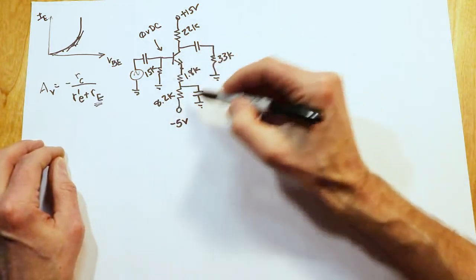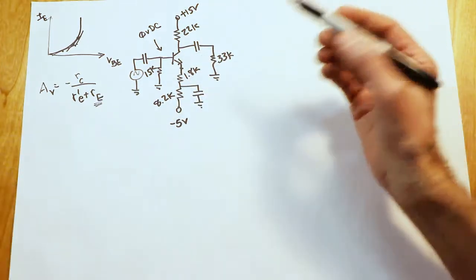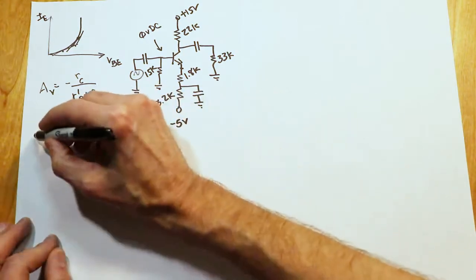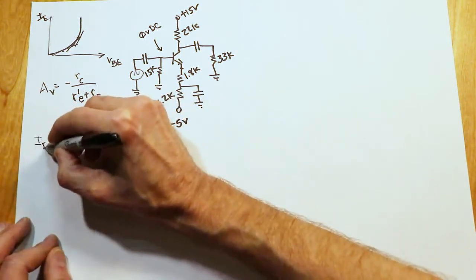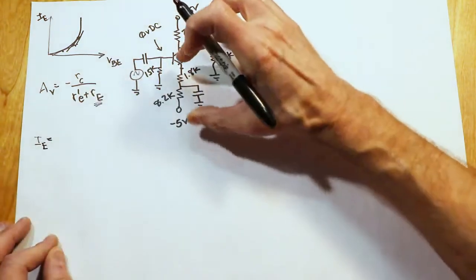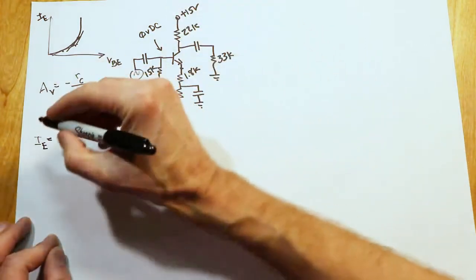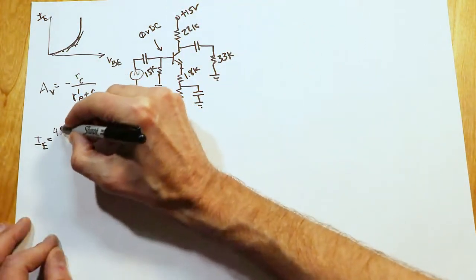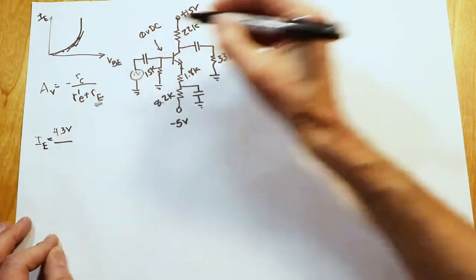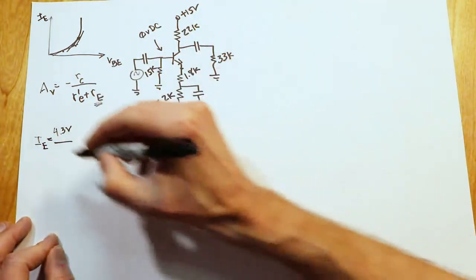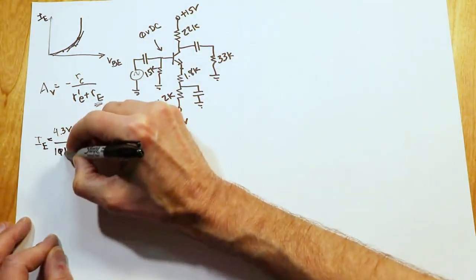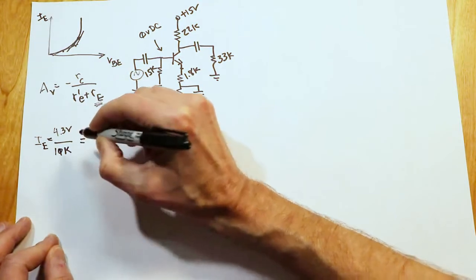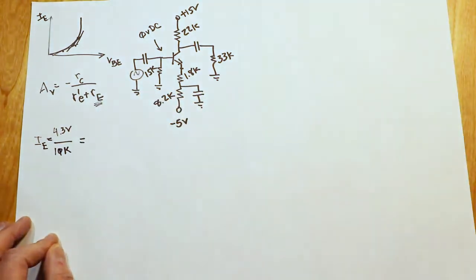The DC sum of these, 8.2K plus 1.8K is 10K, as we said. So the emitter current will simply be that voltage, the minus 0.7 to the minus 5, 4.3 volts, divided by that total resistance, so 8.2 plus 1.8 or 10K. So that's going to give us 0.43 milliamps.